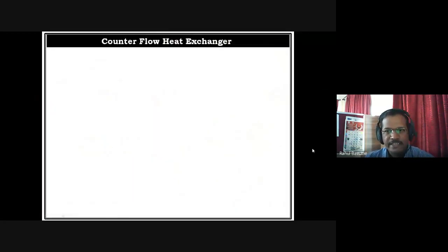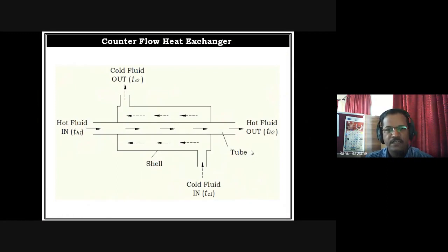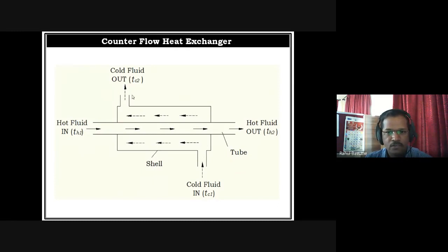For a counter flow heat exchanger, the basic difference from parallel flow is the direction of flow of the cold fluid and hot fluid. In the schematic shown, the hot fluid moves from left to right, and the cold fluid enters from the right and moves in the opposite direction towards the left — parallel to the hot fluid but in opposite direction. This is called a counter flow heat exchanger.